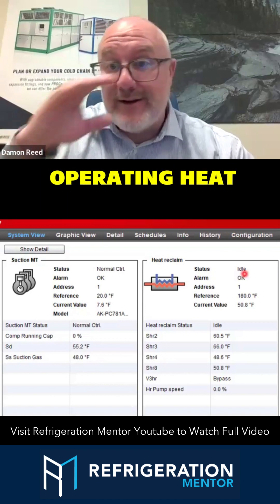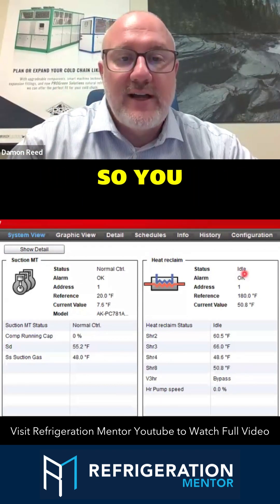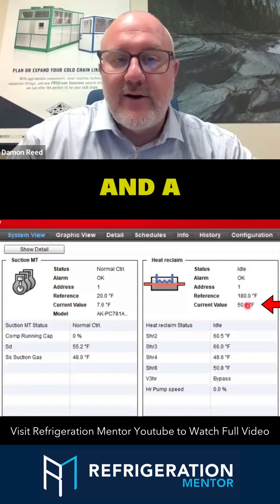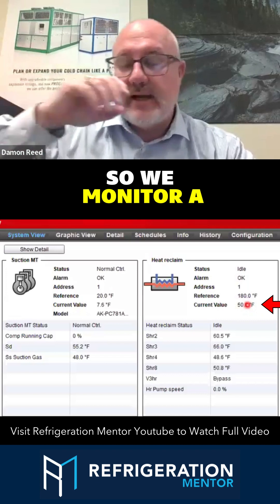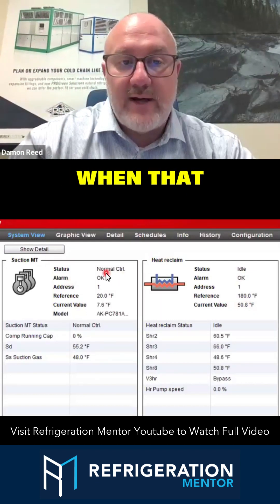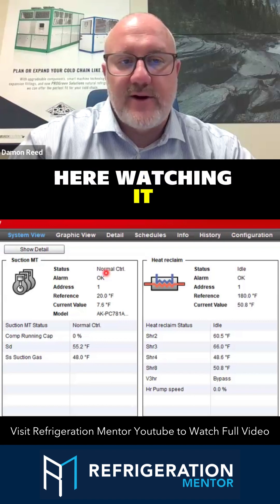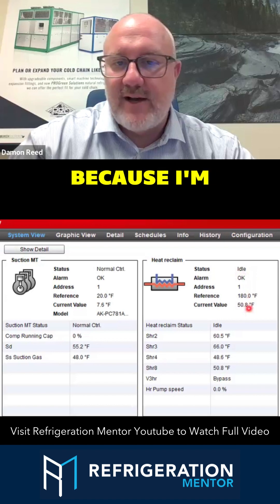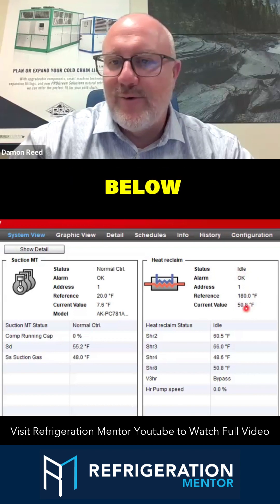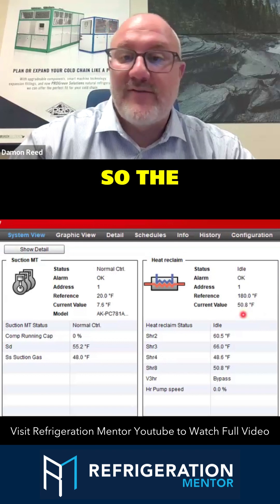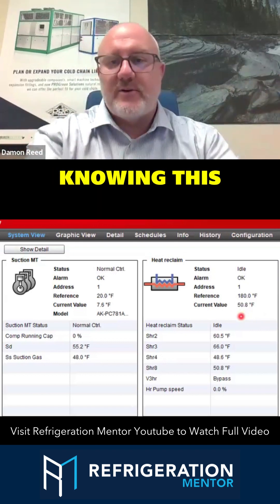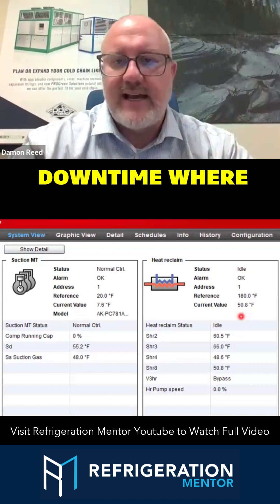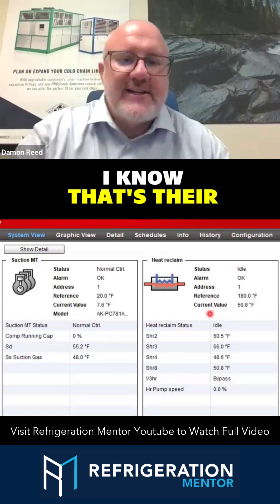Why would I be operating heat recovery if my compressors aren't doing anything? Status is okay. I've got a reference value of 180 and a current value — we monitor a remote sensor. When that compressor starts, I expect this to go into heat recovery mode because I'm 130 degrees below my reference point. Knowing this particular customer, they're just in a down period — they have hours and hours of downtime where they're not in operation.